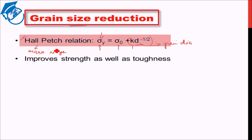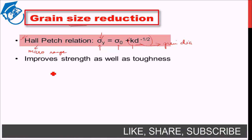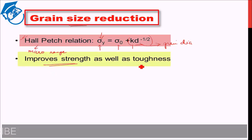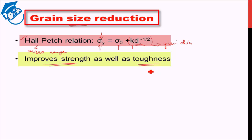One interesting feature of the grain size reduction method is that it is one of the only methods which both increases the strength as well as the toughness — that is, it increases strength as well as the ductility of the material. The other methods we will study lead to an increase in strength with a compromise in ductility. Since grain size reduction improves both properties, it is a very preferred method. The limitation is you can only reach a particular level of strength this way, so other methods are needed if more strength is required.